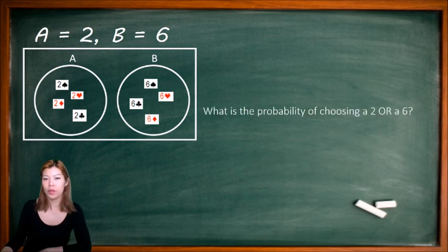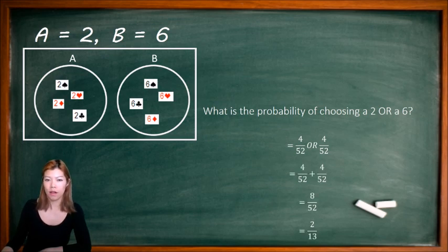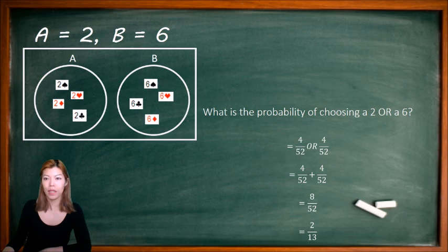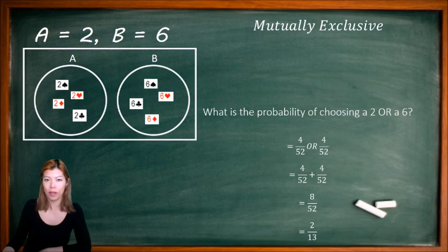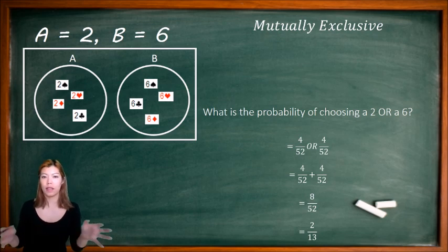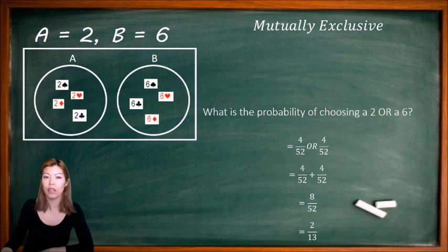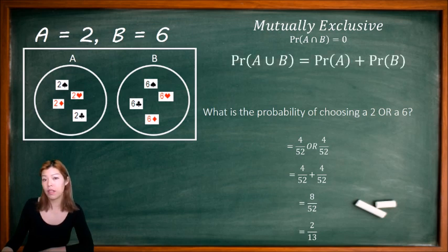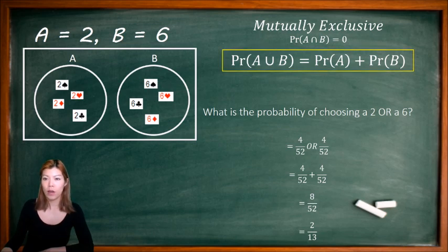What is the probability of choosing a 2 or a 6? The probability of picking a 2 is 4 out of 52 cards; the probability of picking a 6 is 4 out of 52 cards. So we have a total of 8 over 52, or simplified, 2 over 13. We call these events mutually exclusive — when picking A and picking B have nothing in common, no overlap, and the intersect is zero. We can find the probability of A union B by simply adding A and B together.